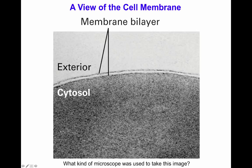When we look at the membrane by microscopy, we can see that there is an outer and inner layer, making it a membrane bilayer. The exterior portion of the cell is exposed to the outside, and the cytoplasmic portion is exposed to the inner layer. As an exercise, please identify what kind of microscope was used to take this image.